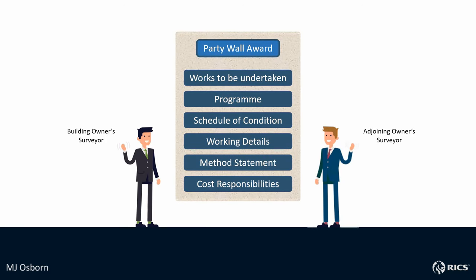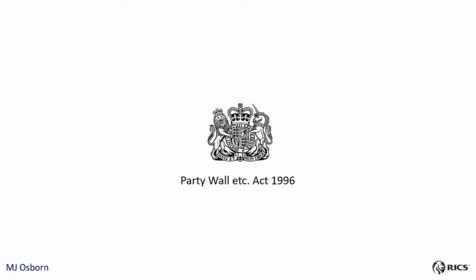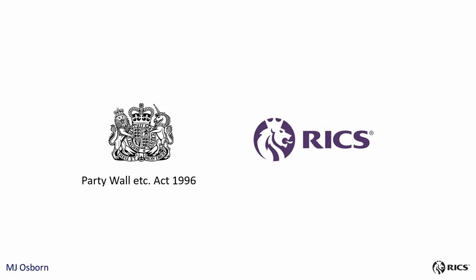The surveyors will then draw up a legally binding document known as the party wall award. This document states the works to be undertaken, a program outlining how and when it will be done. It normally also contains a schedule of condition, working details, a method statement, and states cost responsibilities for construction and surveyors' fees. The person carrying out the works will usually be responsible for the surveyors' fees. To ensure compliance with the Party Wall Act, get in touch with our chartered surveyors.